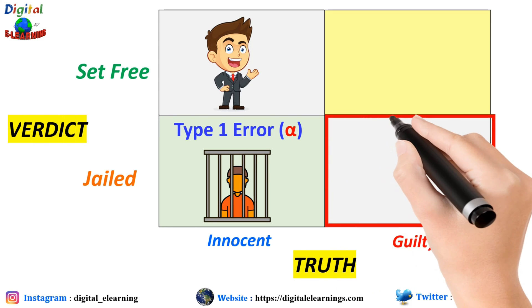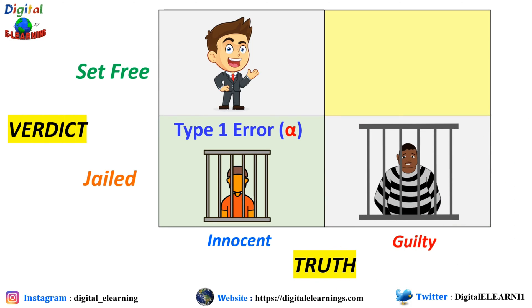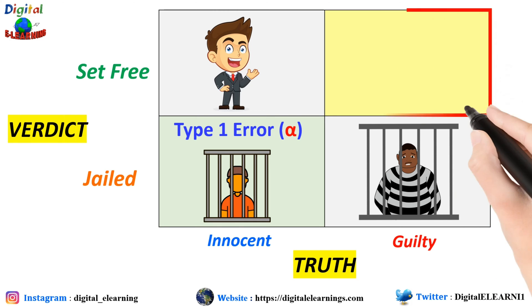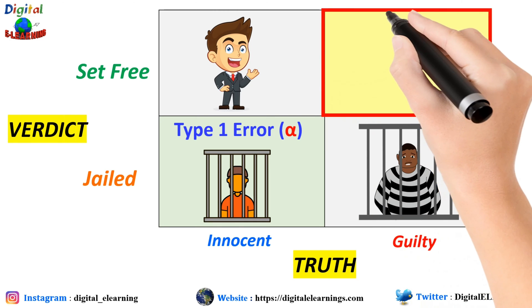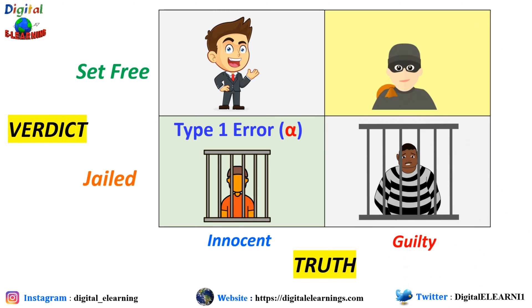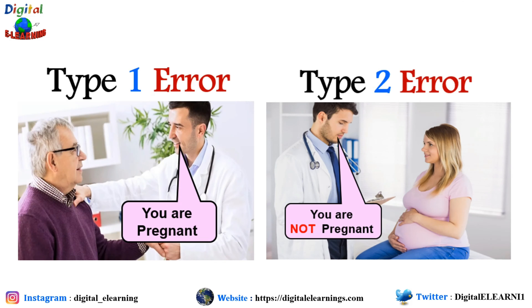Someone who is guilty should be jailed — that is the correct decision. But if someone who is guilty is set free, that is not the correct decision. We call it a type 2 error, or beta error. We call this a false negative — the error made by accepting or retaining a false null hypothesis.